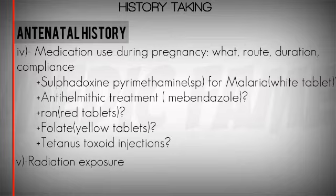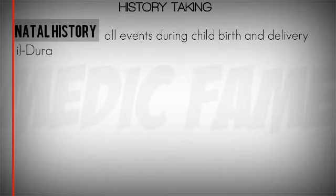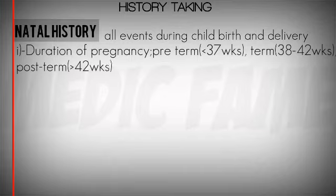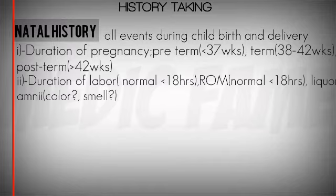We continue with natal history, which means all events during childbirth and delivery. The important components are: duration of pregnancy, which can be preterm, term, or post-term; the duration of labor; the time from rupture of membranes; and the color and smell of the liquor.